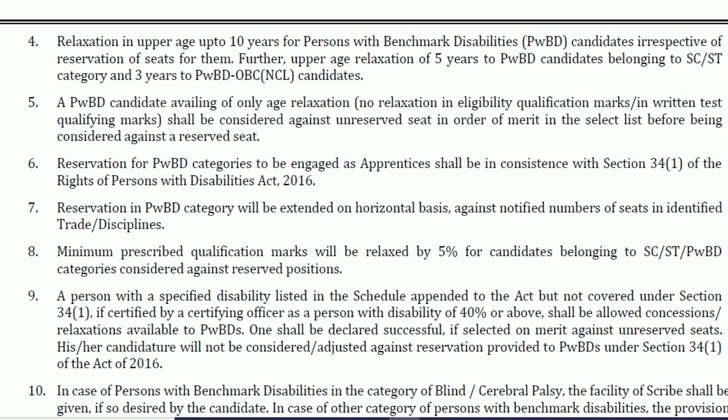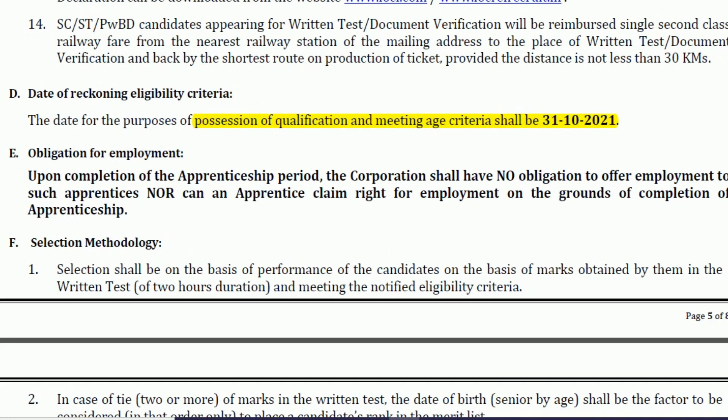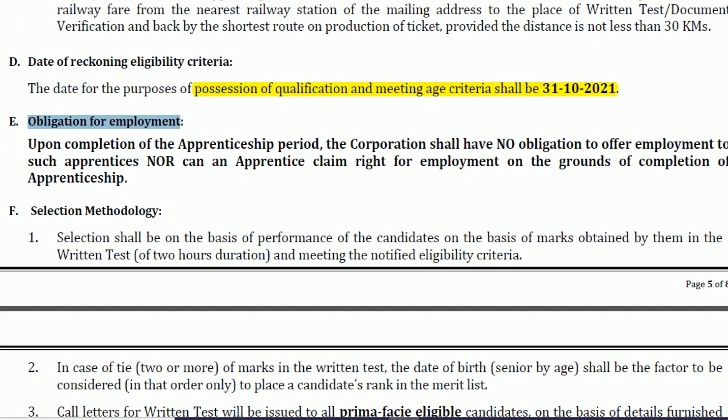You can go through the full age relaxation and other criteria in the detailed notification — the notification link is provided in the description. You must possess the required qualification and meet the age criteria as on 31st October 2021, meaning you should have completed your graduation and meet the age requirement by that date.